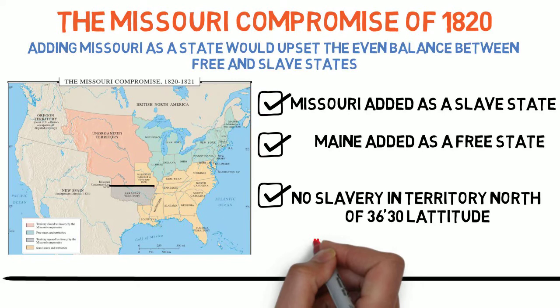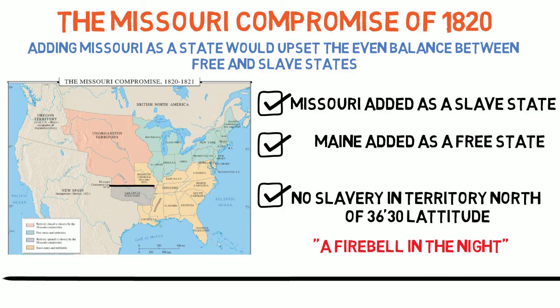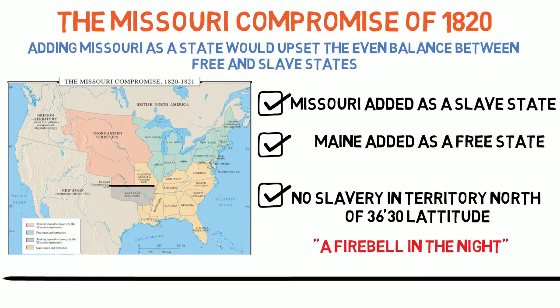Many viewed the Missouri Compromise as only a temporary fix. Thomas Jefferson referred to it as a fire bell in the night, meaning that the Missouri Compromise sounded an alarm for a conflict to come. An important thing to remember about the Missouri Compromise was that it only applied to U.S. territory, which at that time did not include the territory that we would acquire after the Mexican-American War.